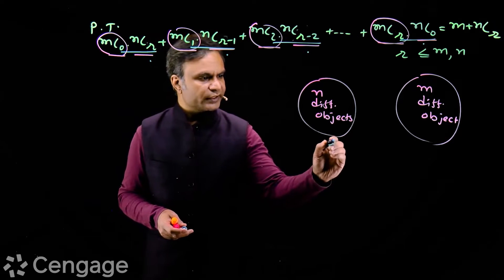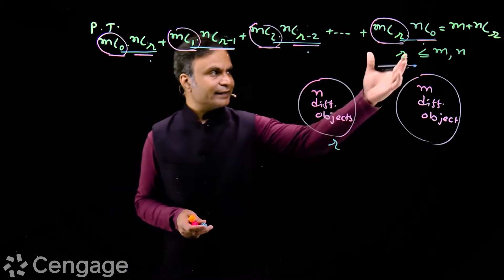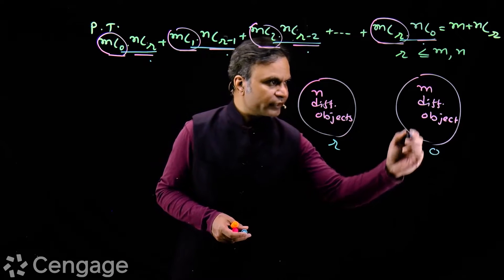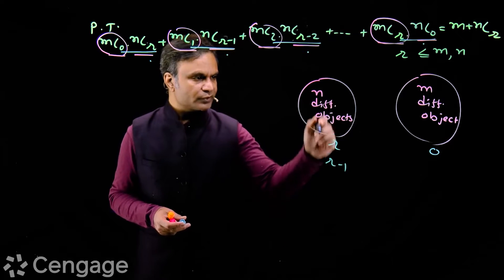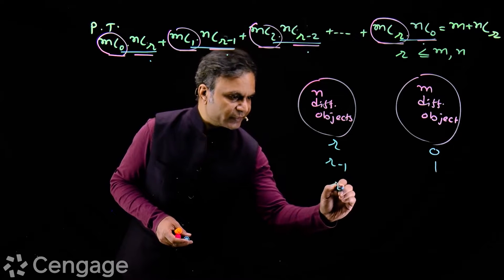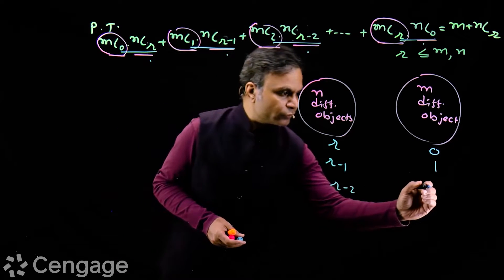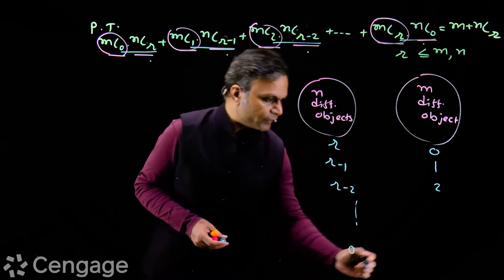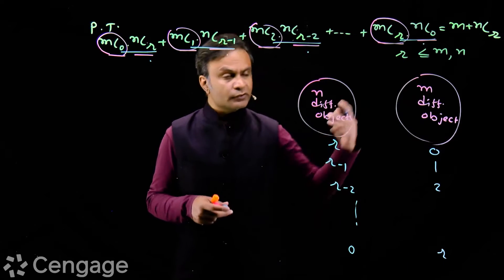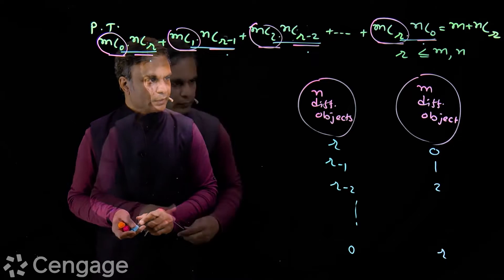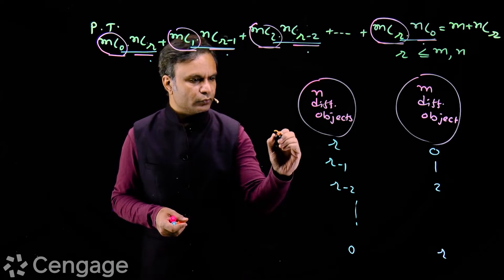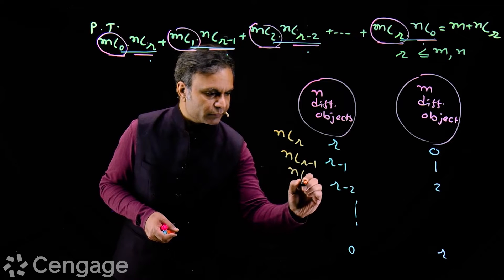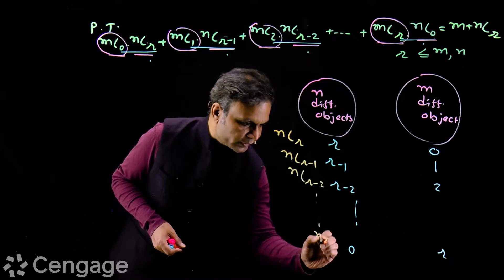We can select all r objects from the first group since n is greater than or equal to r — all objects can come from this group, selecting zero from the second group. Or, we may select r-1 objects from the first group and one from the second. If we select r-2 from the first, we select two from the second, and so on. If we select zero from the first group, we select all r objects from the second group, since m is also greater than or equal to r. Now, the number of ways of selection of r objects equals nCr; of r-1 objects equals nCr-1; of r-2 equals nCr-2; and nC0.